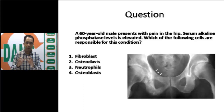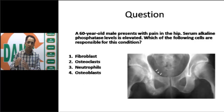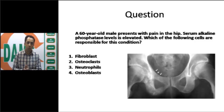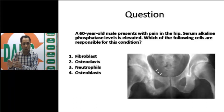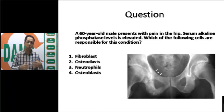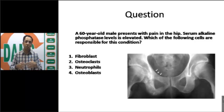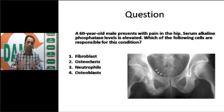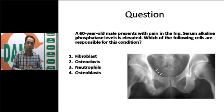They have put everything together - clinical details, biochemical or laboratory parameters, and a radiograph. The question is asking you about the cell of origin or the cell responsible for the disease. In one question they want to test you totally. That is a very typical pattern used in USMLE exams. So how do you approach such a question?